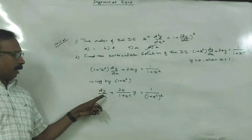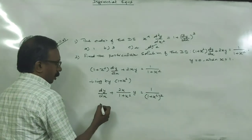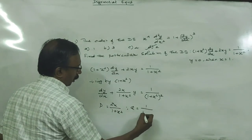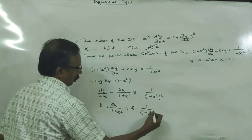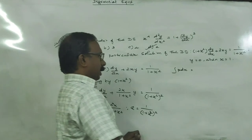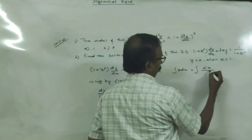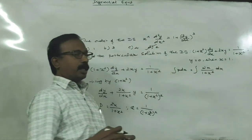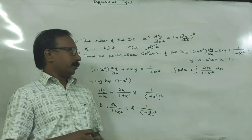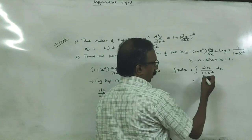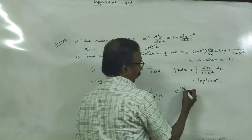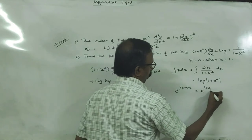It is in the form dy/dx + Py = Q. Here P = 2x/(1 + x²) and Q = 1/(1 + x²)². Now find ∫P dx: the integral of 2x/(1 + x²) — the numerator is the differential coefficient of the denominator, so the integral is log(1 + x²). Therefore the integrating factor e^(∫P dx) = e^(log(1 + x²)) = 1 + x².